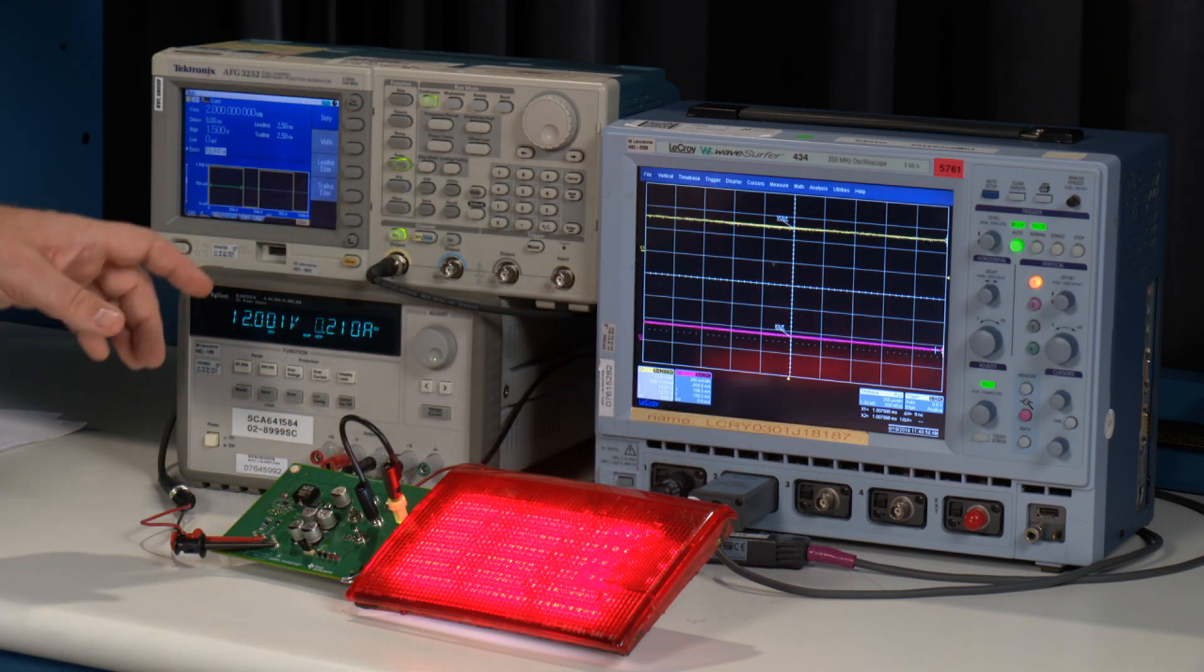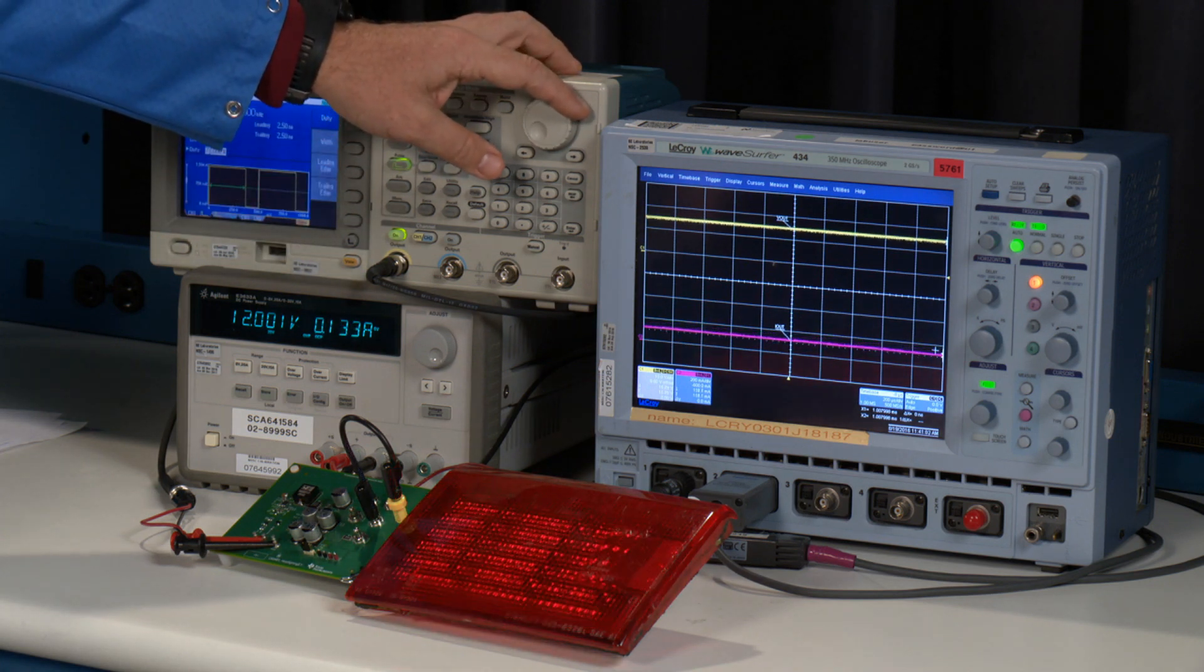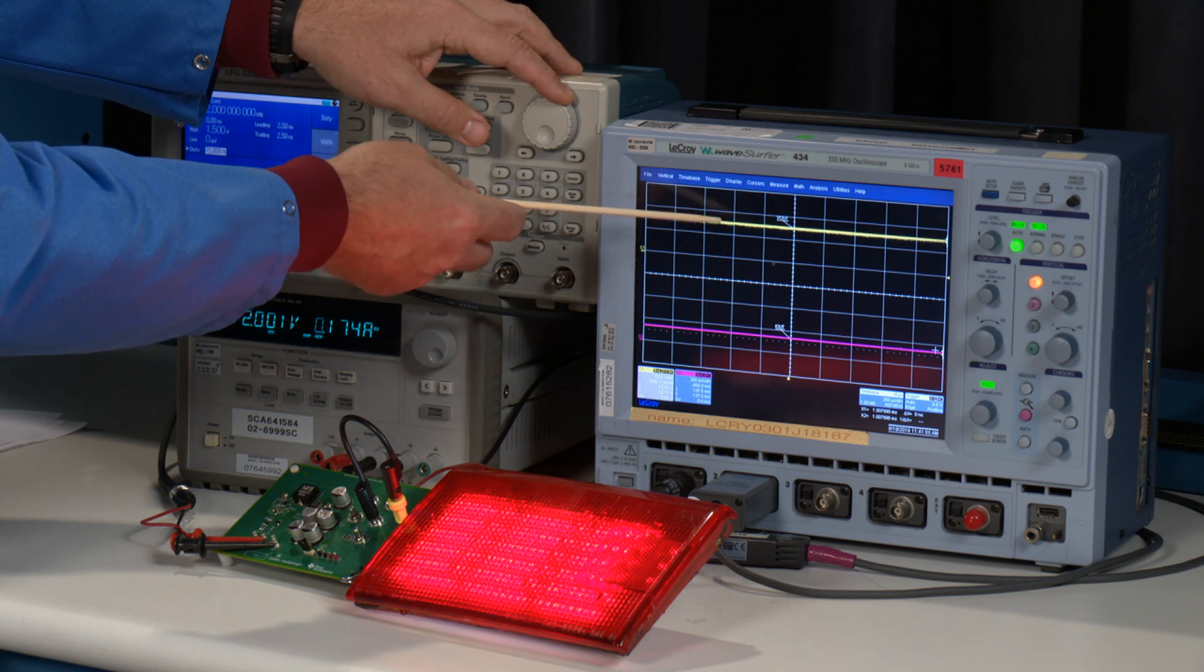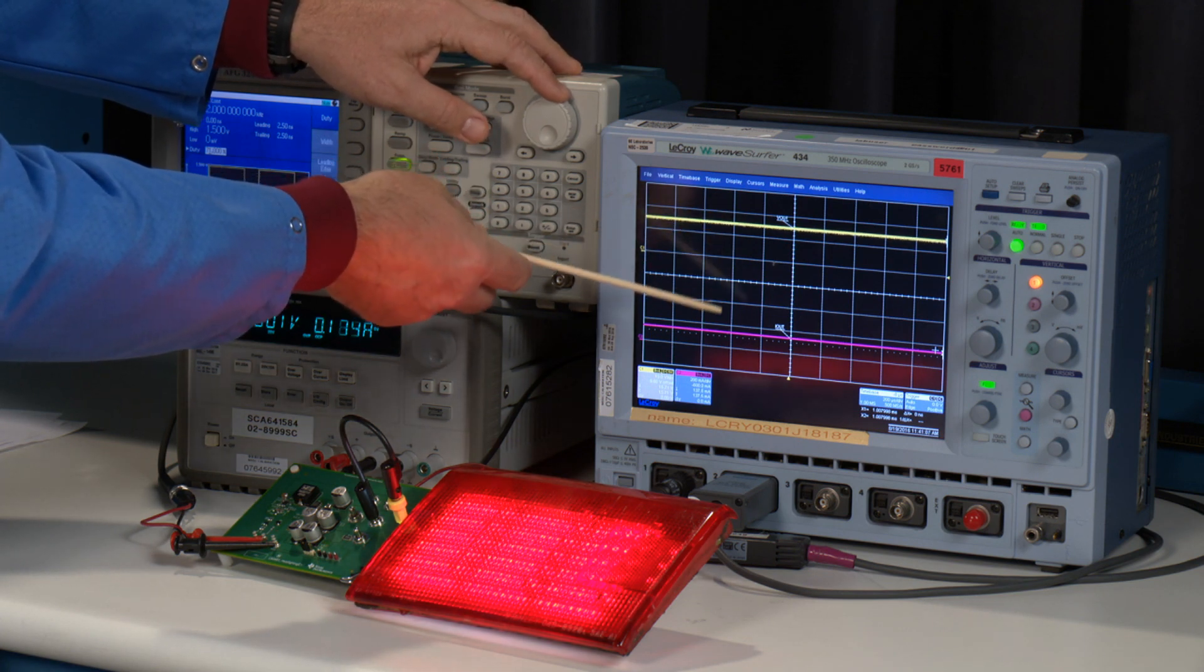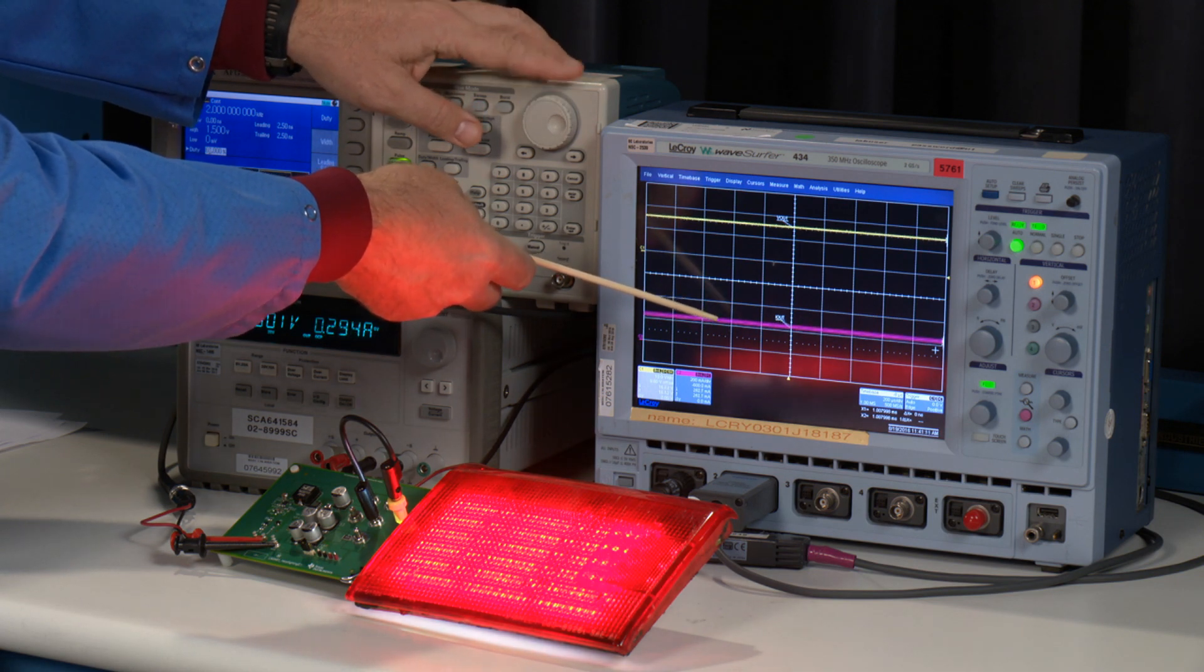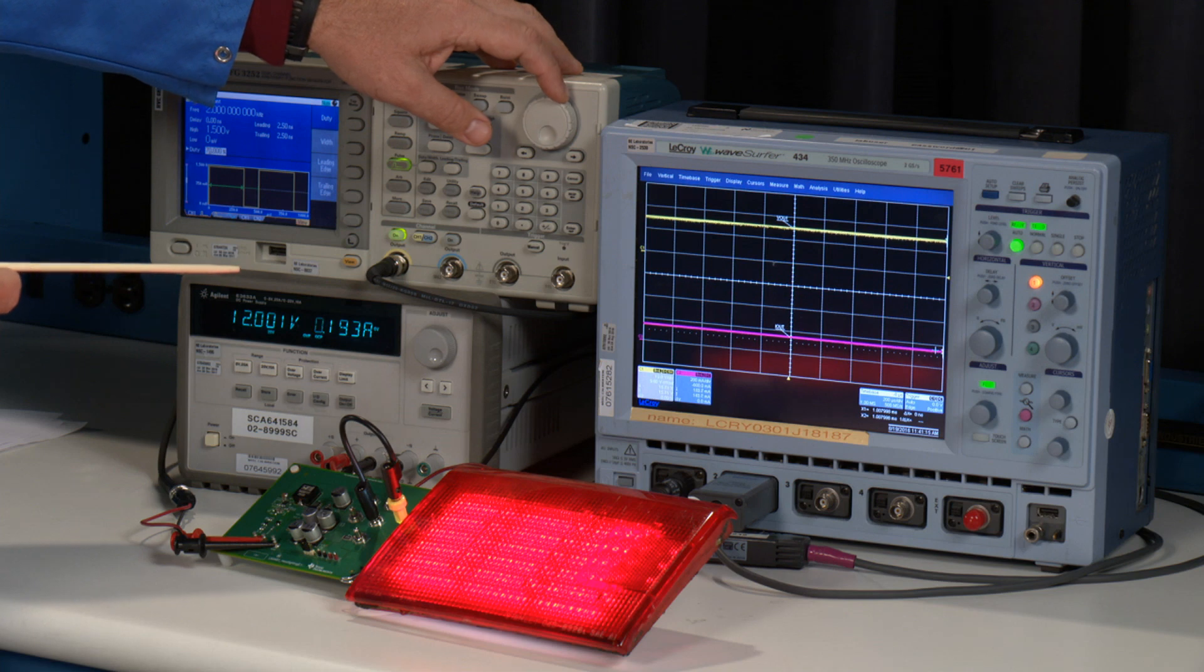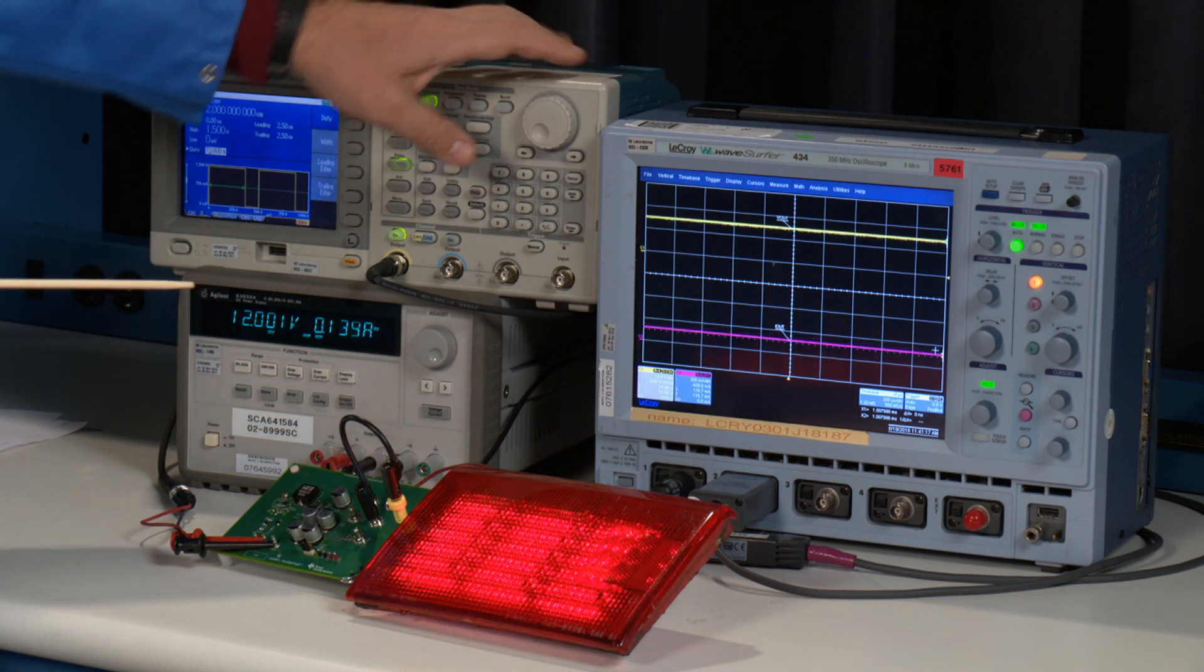So first thing I'm going to do is actually increase and decrease the intensity of the light. What you should be able to see on the oscilloscope is the V out voltage up here maintaining and the current will increase and decrease linearly based on the output power of the LEDs. So it's nice and clean.